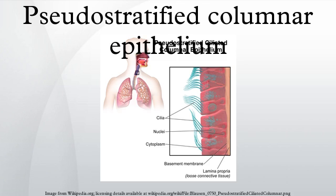The term pseudostratified is derived from the appearance of this epithelium in section, which conveys the erroneous impression that there is more than one layer of cells, when in fact this is a true simple epithelium since all the cells rest on the basal lamina. The nuclei of these cells, however, are disposed at different levels, thus creating the illusion of cellular stratification.